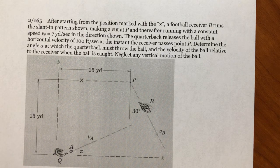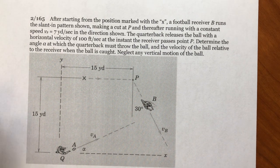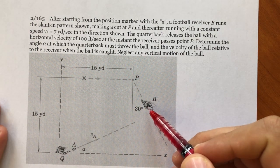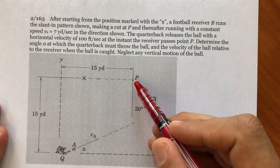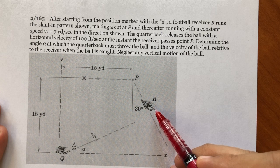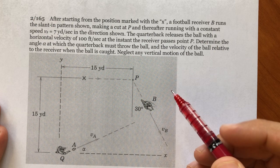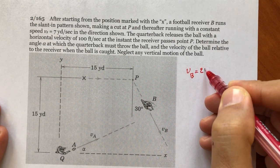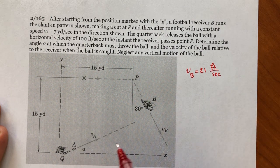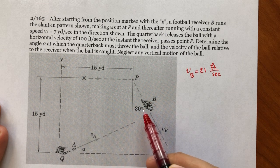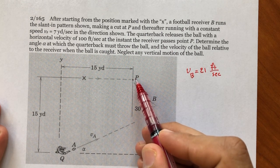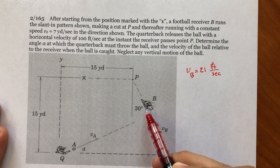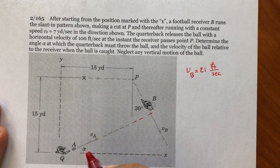Problem 165 — this is another example of related velocity. We have two football players. Player B is moving from point P at 30 degrees from the vertical line with a constant speed of 7 yards per second, or 21 feet per second. Player A is throwing the ball to player B, and at the moment B starts to run from point P, A shoots the ball. B is going to catch it at some point.